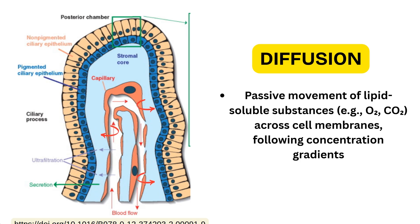Here, the lipid-soluble substances like oxygen and carbon dioxide can passively move across the cell membrane down their concentration gradients from the plasma into the ciliary stroma.